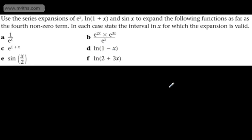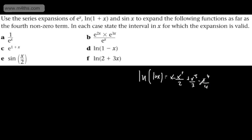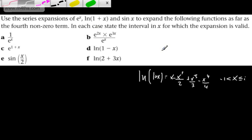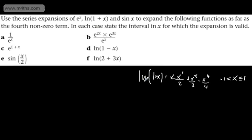Let's look at the natural log of 1 minus x. We know that the natural log of 1 plus x gives rise to x minus x squared over 2 plus x cubed over 3 minus x to the 4th over 4 as the first four terms, valid for x strictly greater than minus 1 and less than or equal to positive 1. So that's our Maclaurin expansion for 1 plus x; now let's look at 1 minus x.